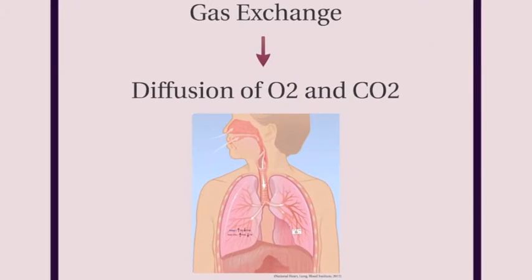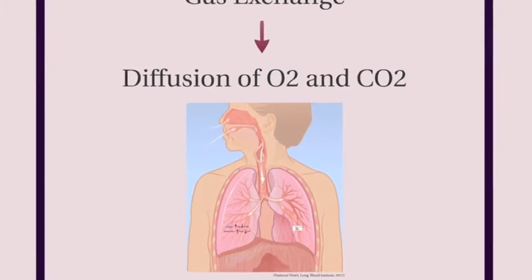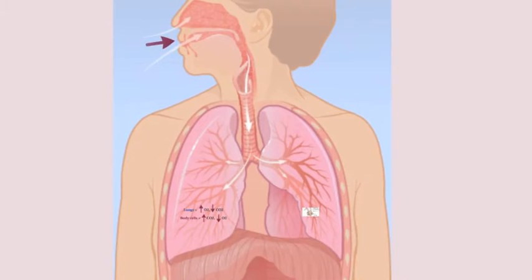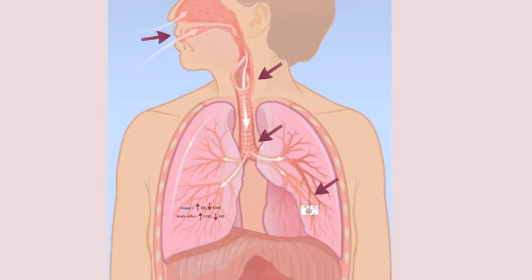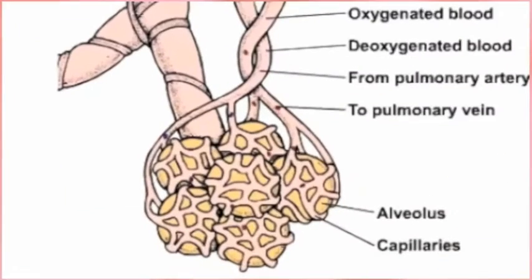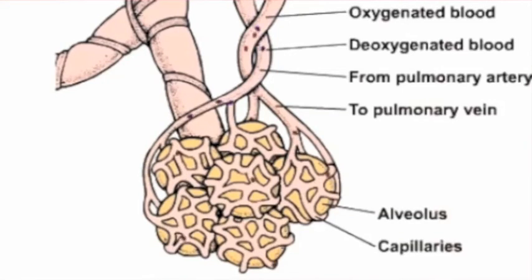Before we go any further talking about hemoglobin and what it does in our body, it's important to understand our lung anatomy. As you breathe in, air enters our mouths and goes through our trachea, which splits into the bronchi, which then further splits into the bronchioles, and finally ends at tiny microscopic hollow sacs called alveoli. Your alveoli are covered in tiny blood vessels called capillaries that bring red blood cells to the site for gas exchange.